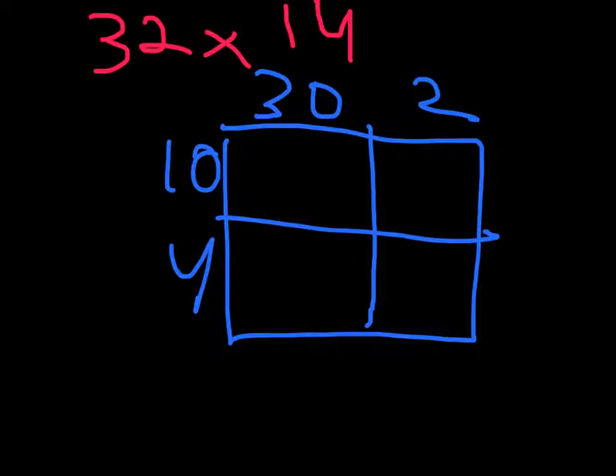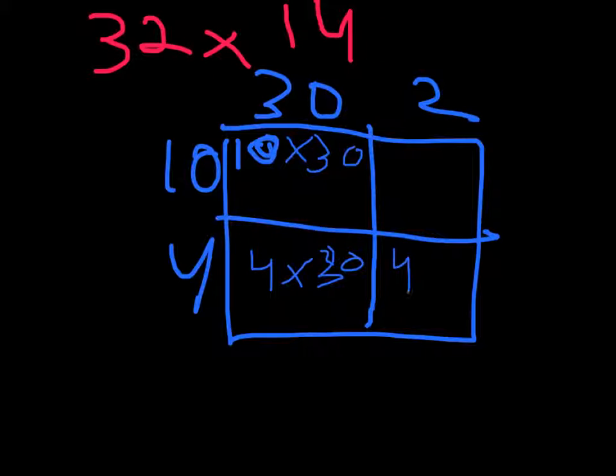Then we put 32 and 14. Then we do 10 times 30 and 4 times 30, 4 times 2 and 10 times 2.